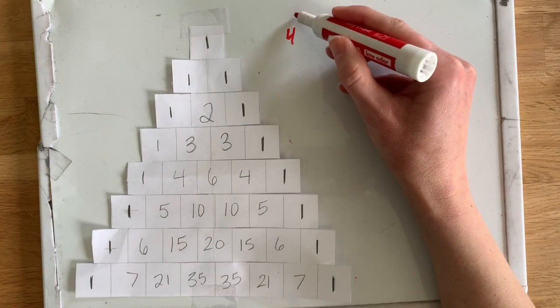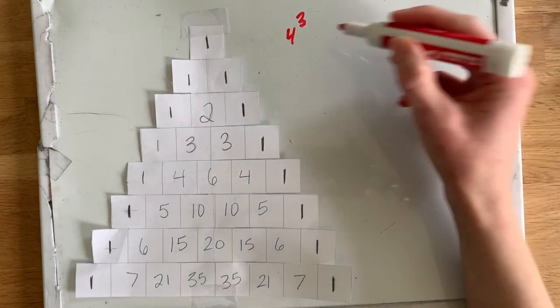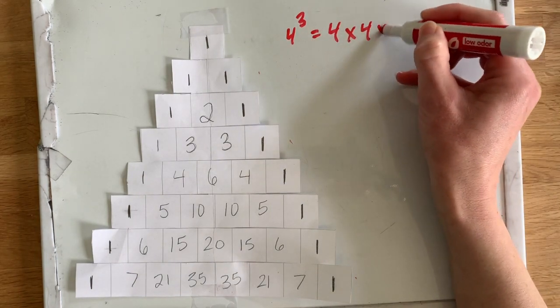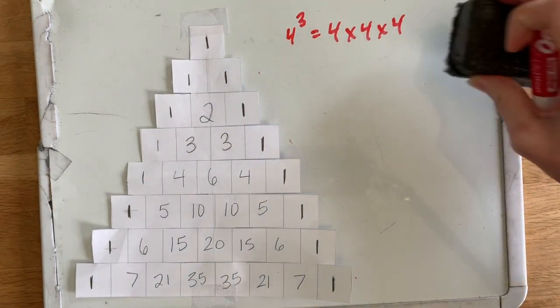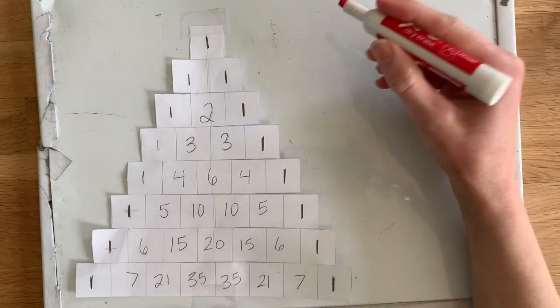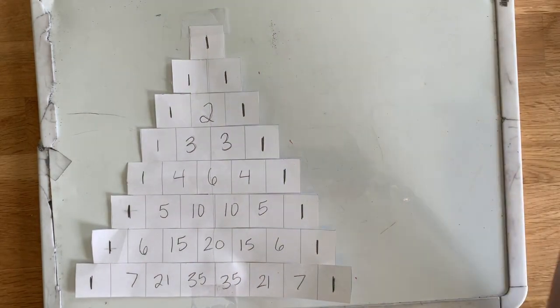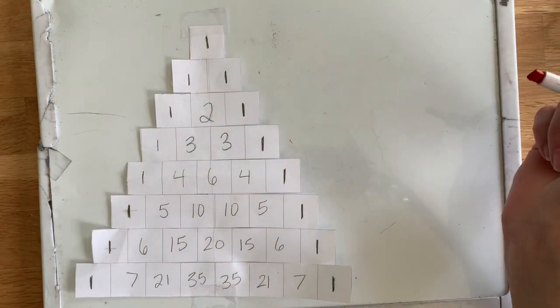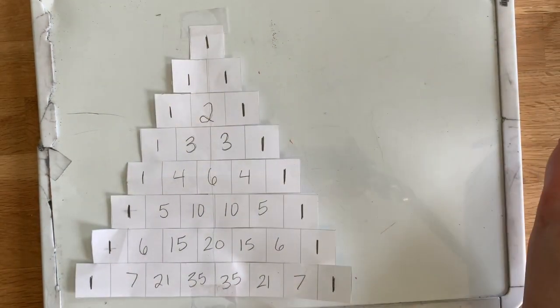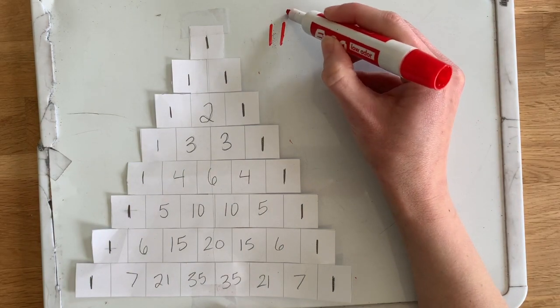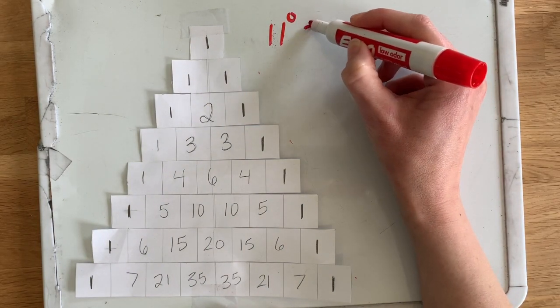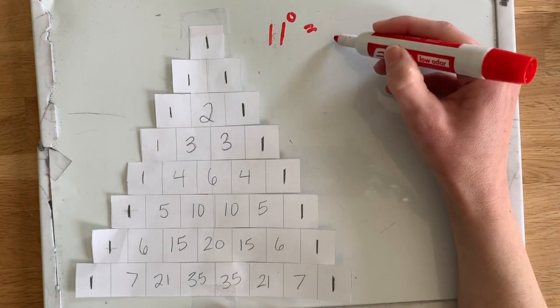But there can be exponents that aren't just two. So if we had four to the third power, that means four times four times four. That would be four times four is 16 times four again. So we could have any sort of exponent.